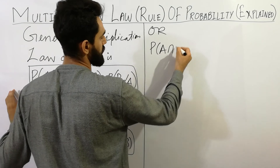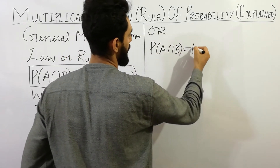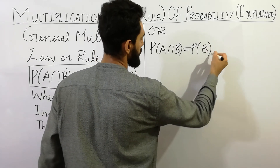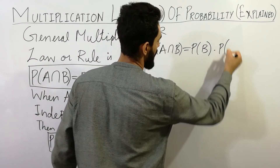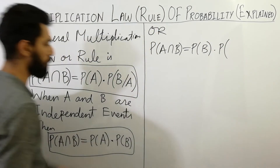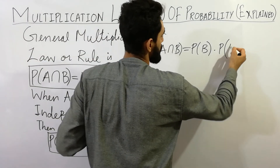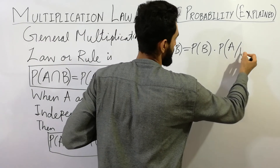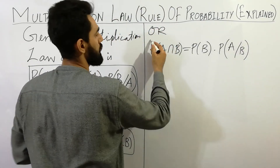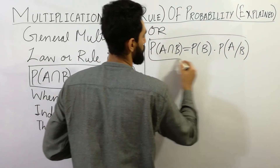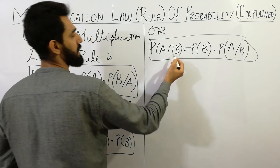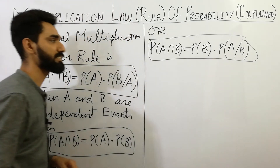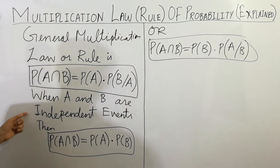This formula can also be written as: probability of A intersection B equals probability of B multiplied by probability of A given B. So the formula can also be written as probability of B multiplied by probability of A given B.